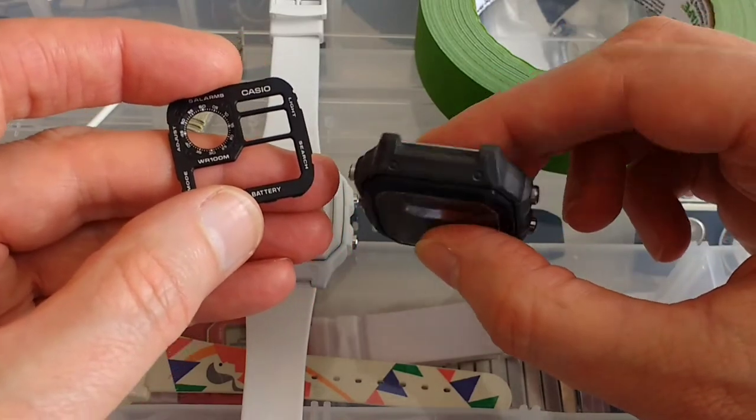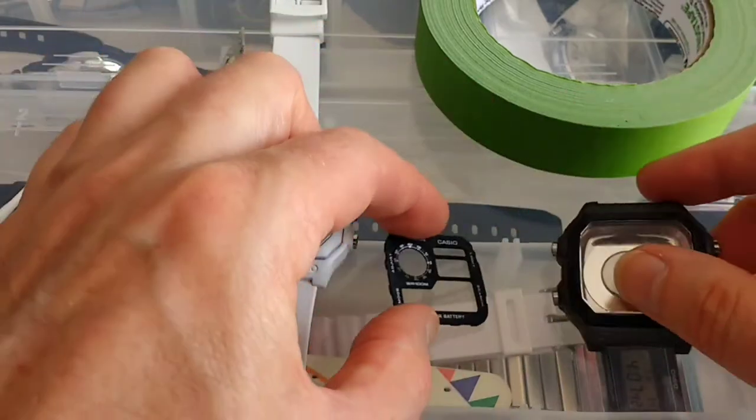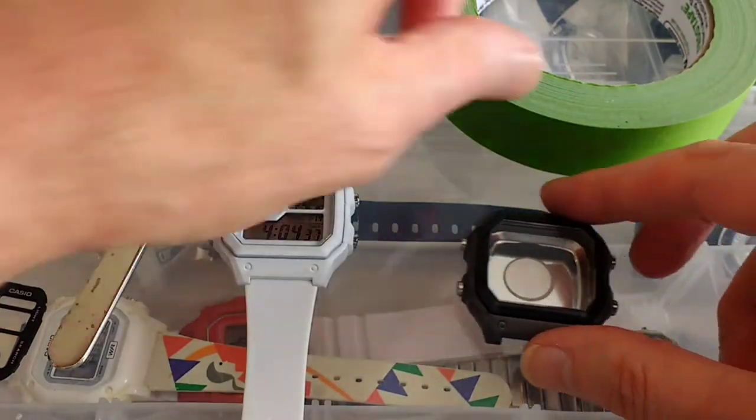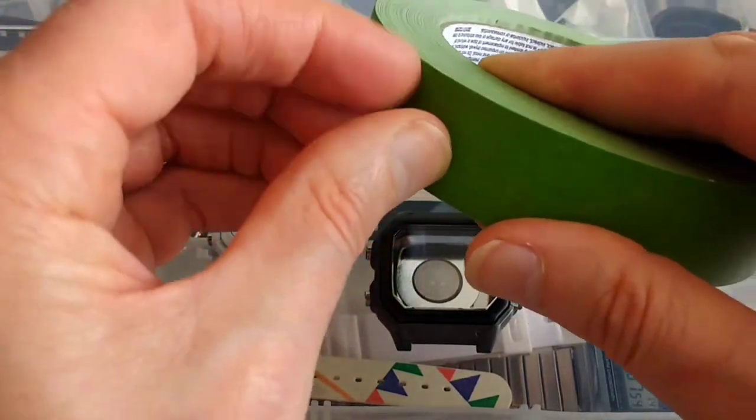So I'm going to take these two and spray them white. First we need to clean them and then use some masking tape. I'm using this green frog tape but any kind of masking tape will do.